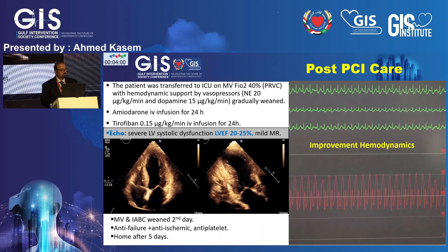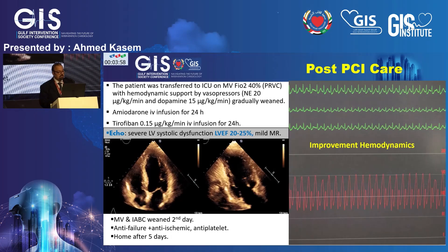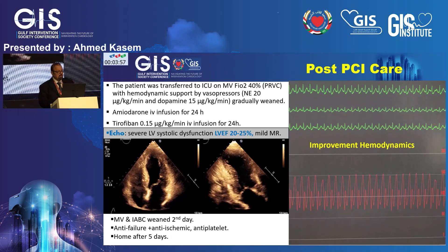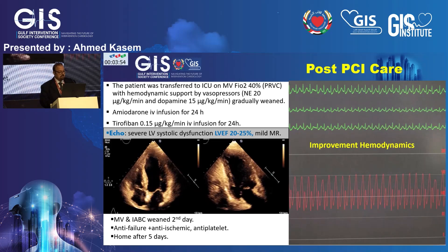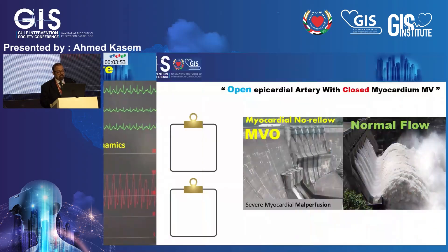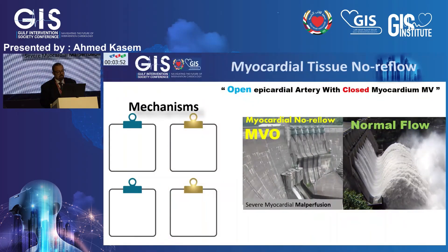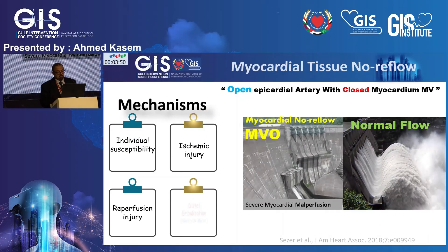Echocardiography showed severe LV dysfunction with anterior wall akinesia. After 24 hours, the patient was weaned off vasopressors and amiodarone. The patient stabilized and went home after five days.